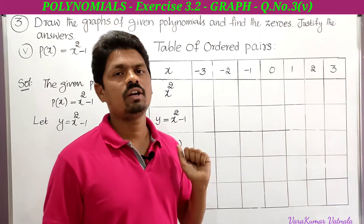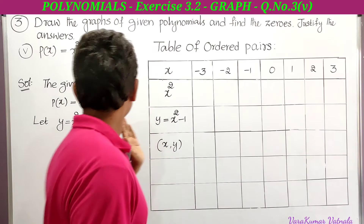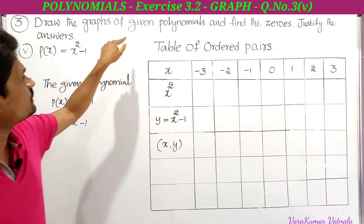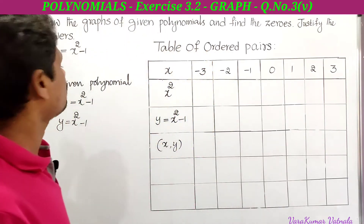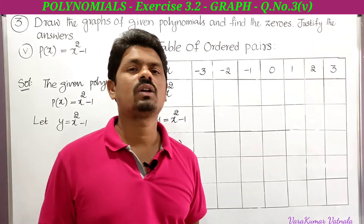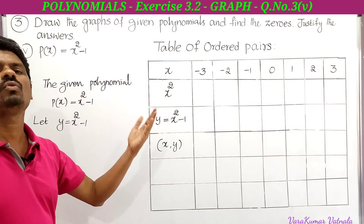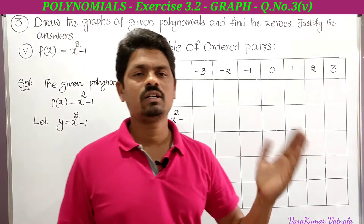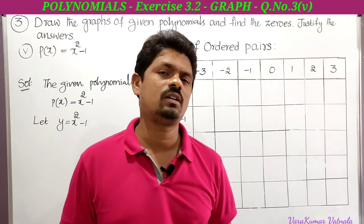You have to concentrate, draw, and practice three or four times so you can get it perfect. See here what is given in the fifth one: draw the graphs of the given polynomials and find the zeros, justify the answers. The fifth one is p(x) = x² − 1. It is very easy compared to the remaining four — it has only x² and a constant, there is no x term here. So finding the ordered pairs is very easy.